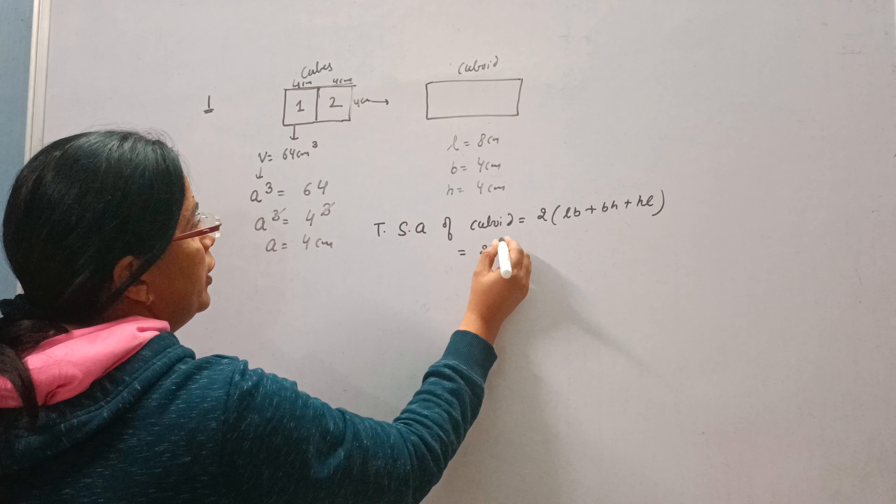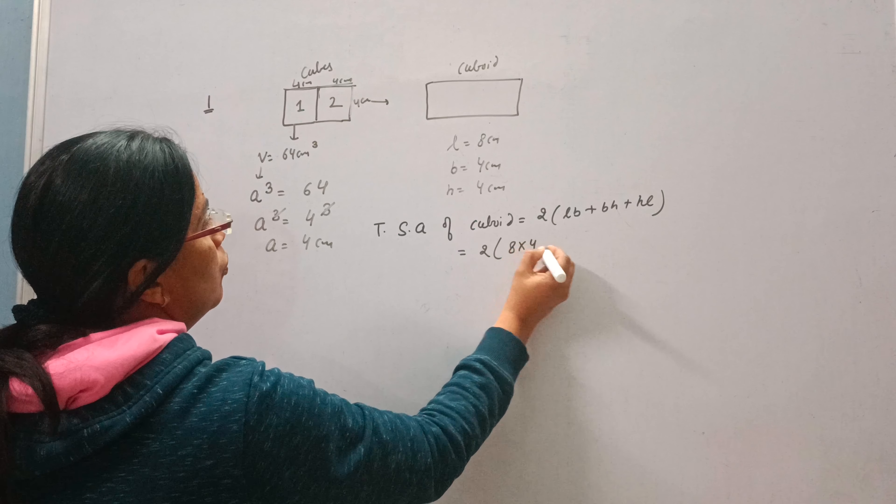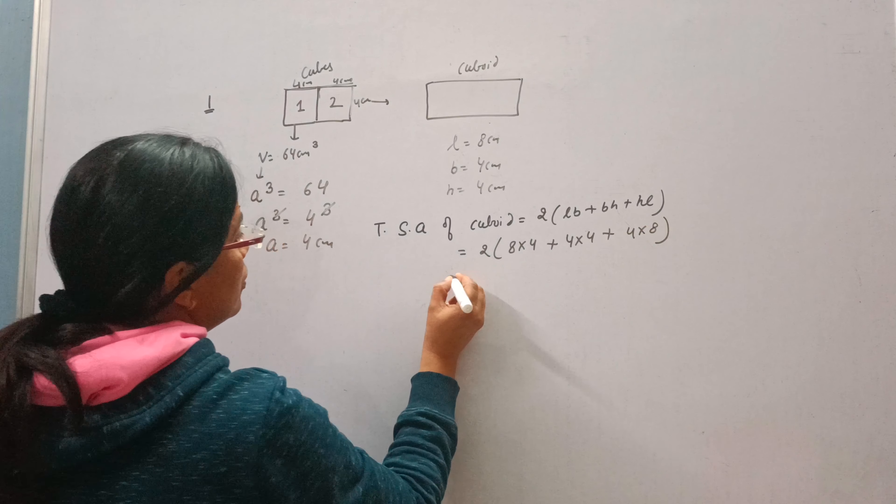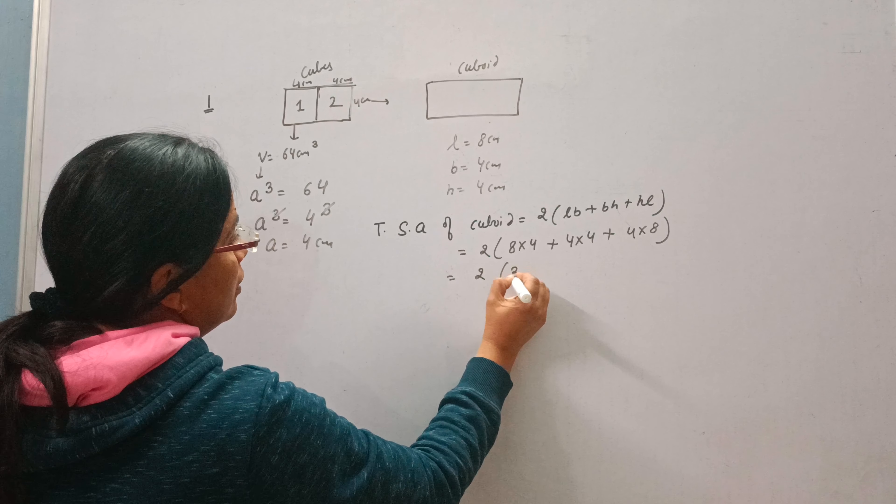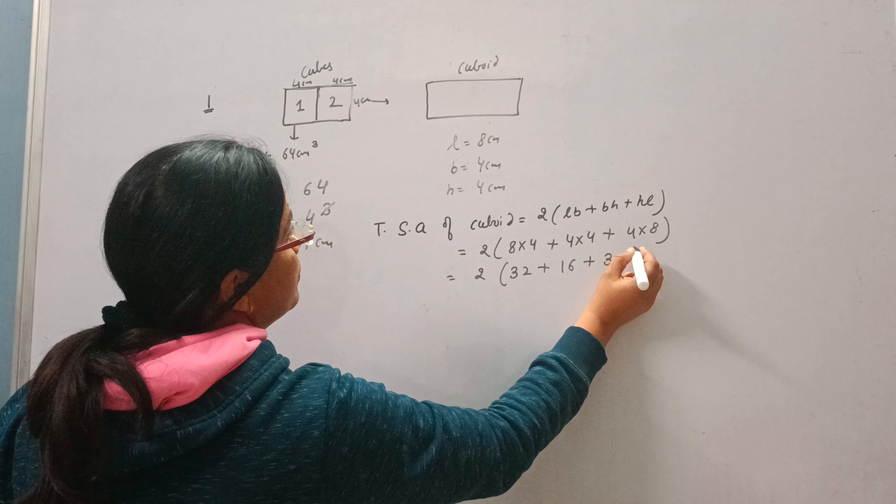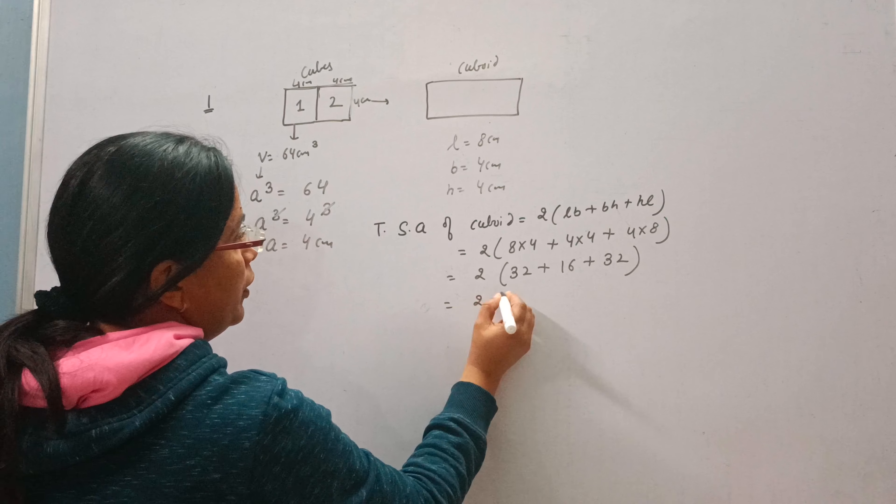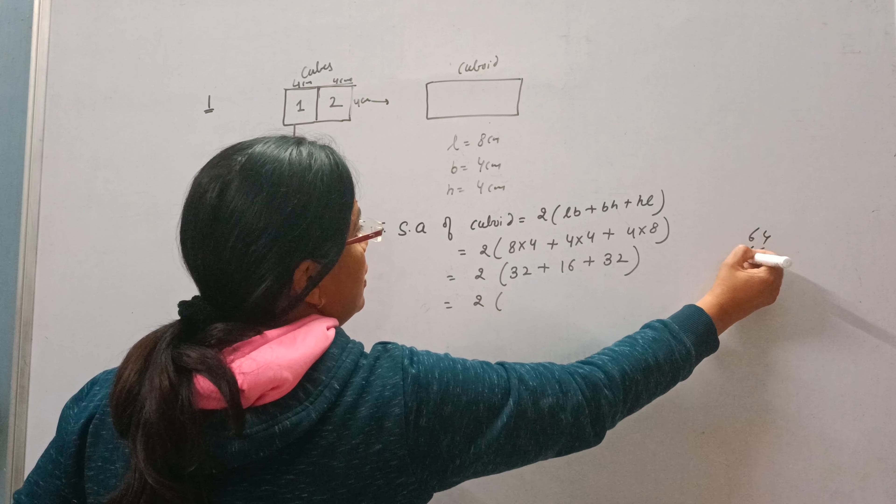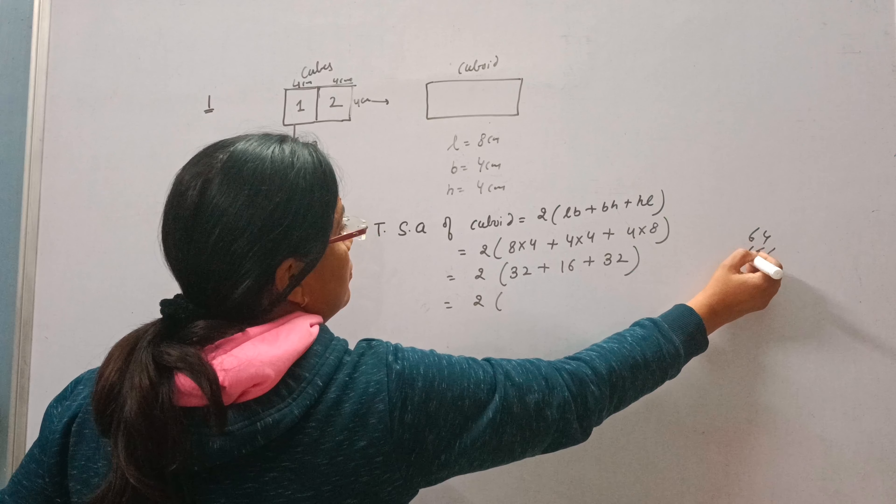Now 2 into LB, 8 into 4 plus 4 into 4 plus 4 into 8. So 32, 4 fours are 16, 4 eights are 32. So 2 into 32, 32, 32. 64 plus 16, 80.